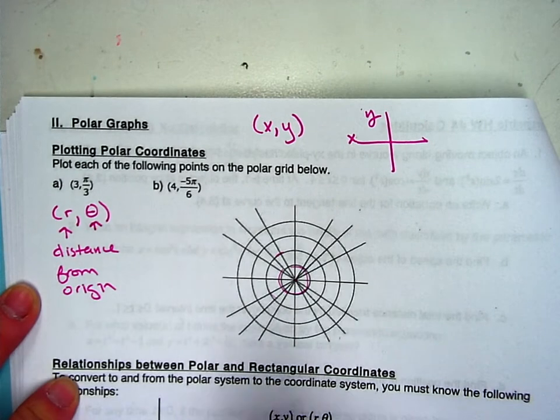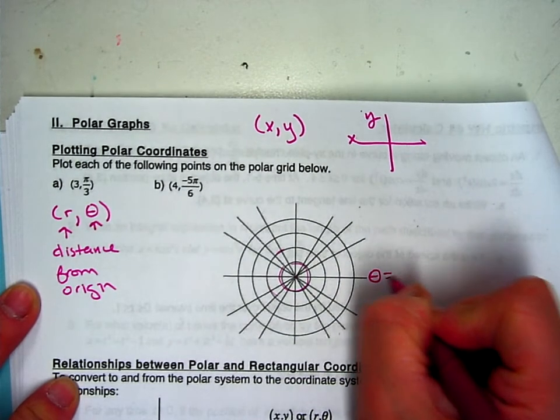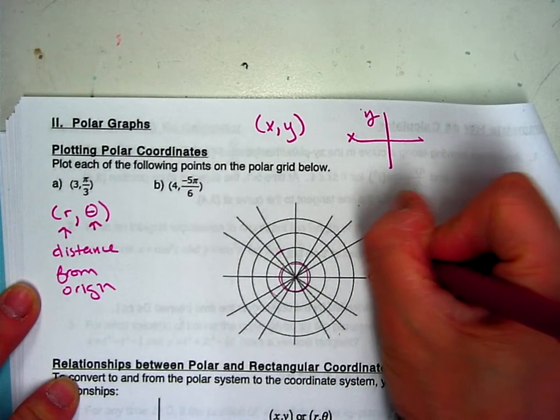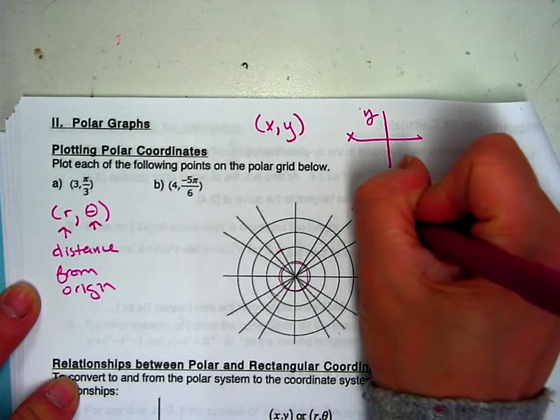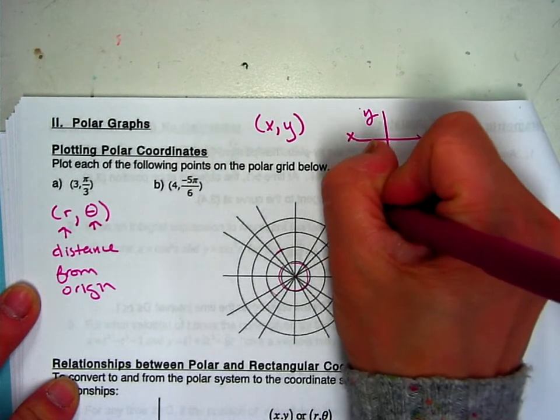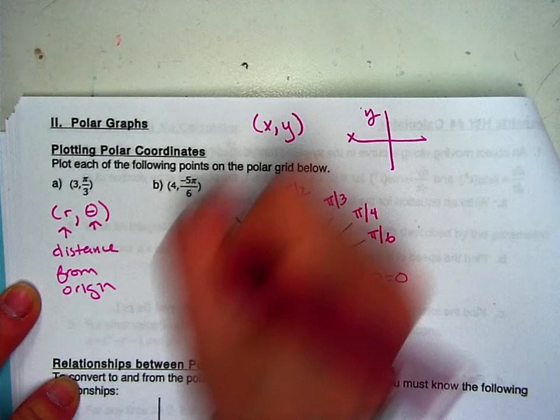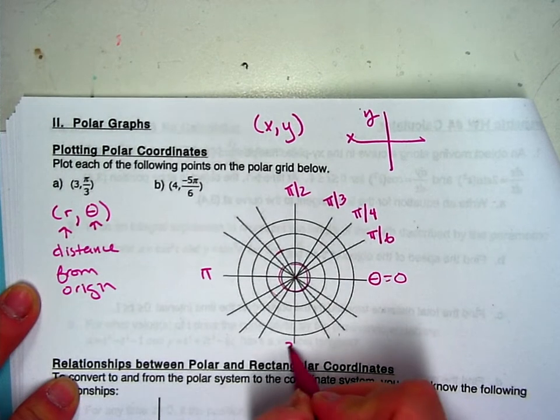And then this is theta, your angle. So if this is theta equals 0, then this is 30 degrees which is pi over 6, this is your pi over 4, this would be pi over 3, pi over 2, all the way around to 2 pi again.